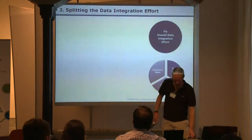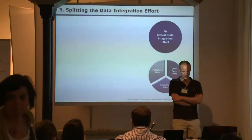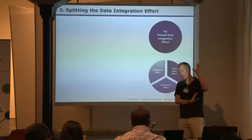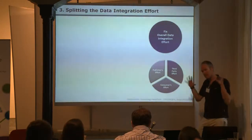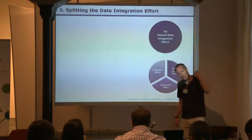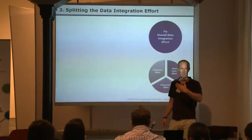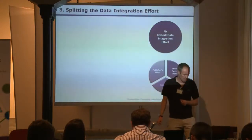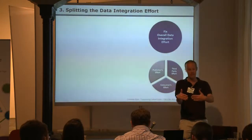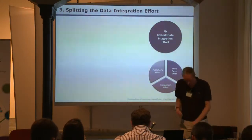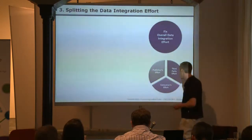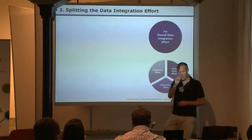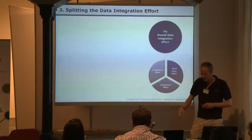For my last topic — splitting the data integration effort — what distinguishes linked data from other data integration architectures like federated querying or data warehouses is that all data is put in one global data space, but you can also put integration knowledge into the same data space. People who spend effort figuring out how the schemata of two data sources match can publish the results of this integration effort to the web so that other people can use them. The data integration effort can be split between consumers, third parties, and publishers.